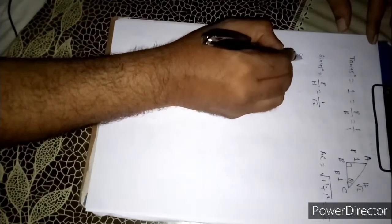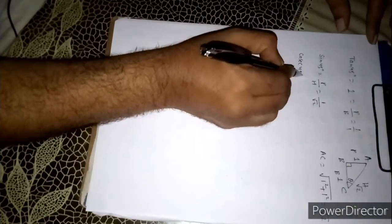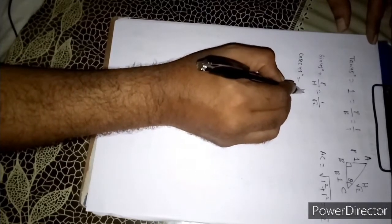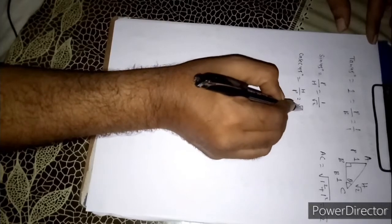If I want to know cosec 45, cosec 45 is the reciprocal of sin 45 means H by P, it means root over 2.